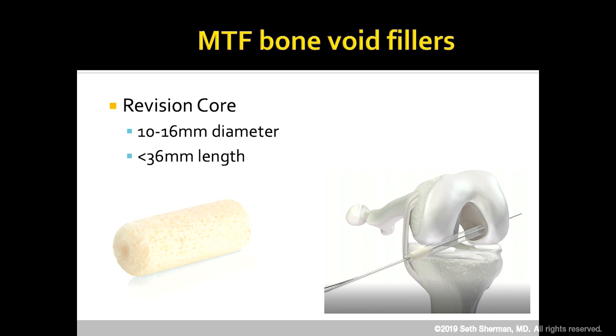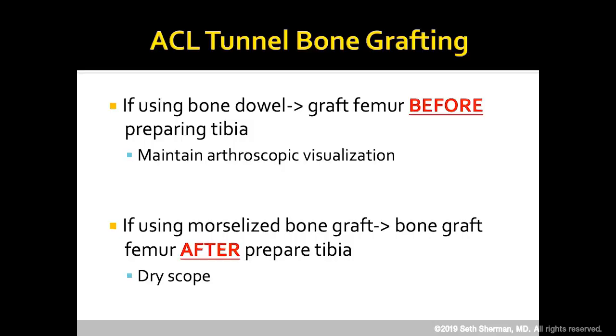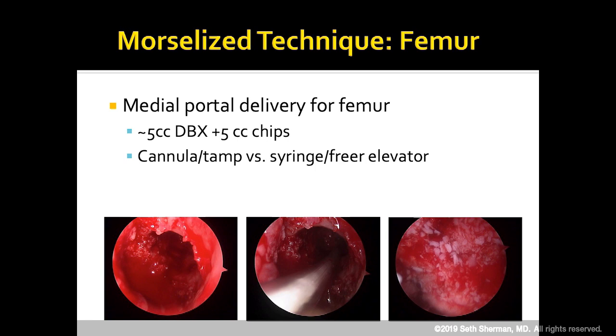Bone dowels are 10 to 16 millimeters in diameter and less than 36 millimeters in length. If using bone dowels, graft the femur before preparing the tibia to maintain arthroscopic visualization. If using morselized bone graft, bone graft the femur after preparing the tibia, essentially doing this as a dry arthroscopy. For the femur, we use a medial portal delivery, typically DBX plus chips, and a new cannula tamp system that will make life easier.